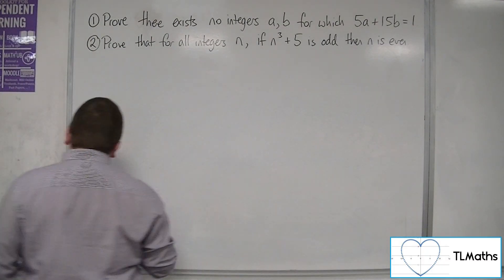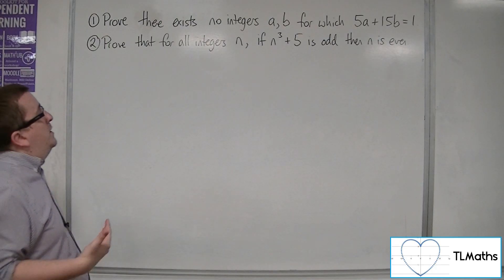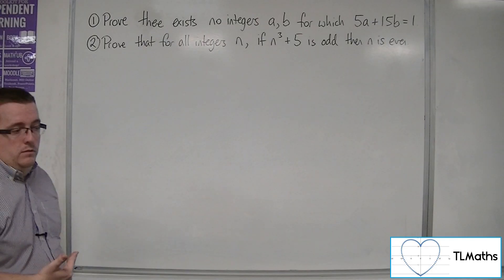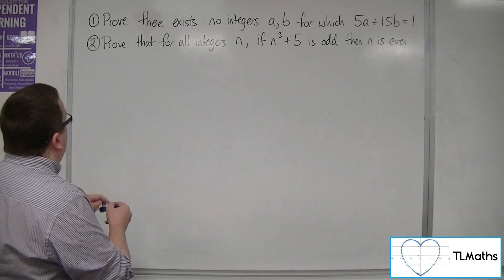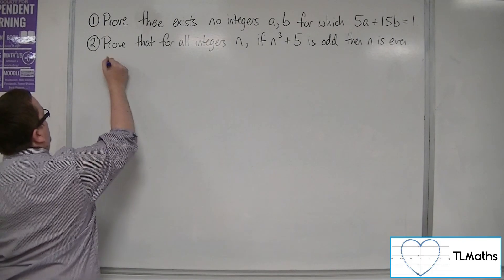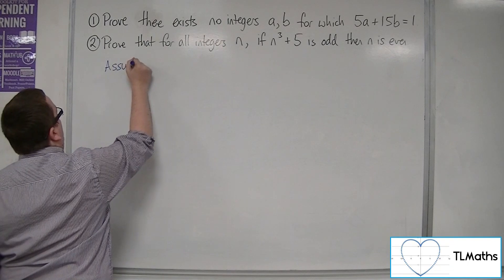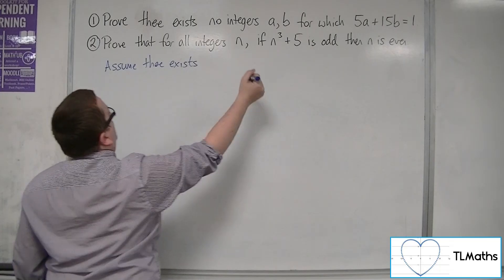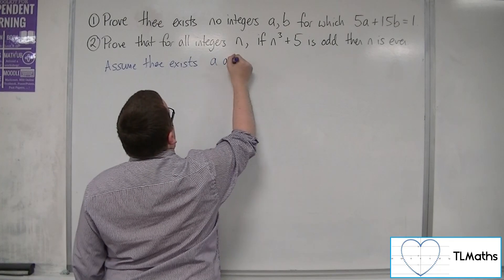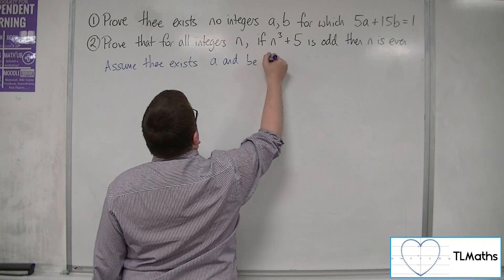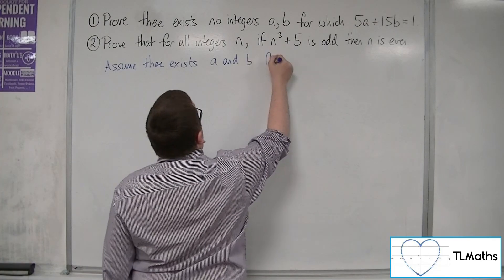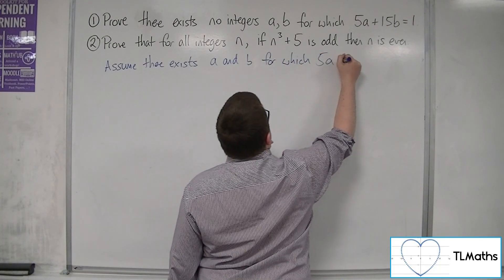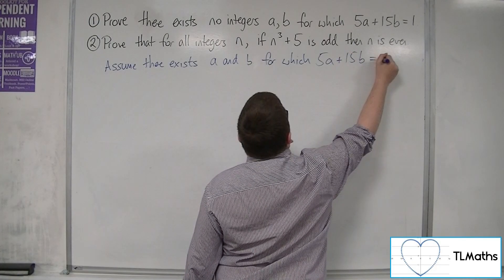So the first thing that we need to do in a proof by contradiction is assume the opposite. Let us assume there exists a and b for which 5a plus 15b is equal to 1.